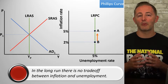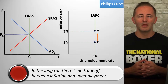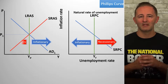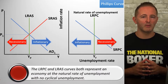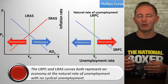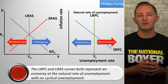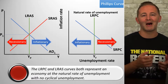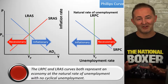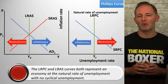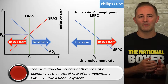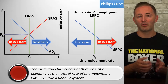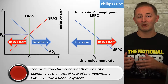Let's start with the placement of the LRPC. The LRPC is vertical at the natural rate of unemployment. This means that there is no cyclical unemployment, which also means that our economy is in long-run equilibrium. So when the economy is on the LRPC, it's the same as it being on the LRAS on the ADAS model. Lots of acronyms, but stick with me. This also means that when we're anywhere to the left of the LRPC, the economy is in an inflationary gap, while to the right of the LRPC it's in a recessionary gap.